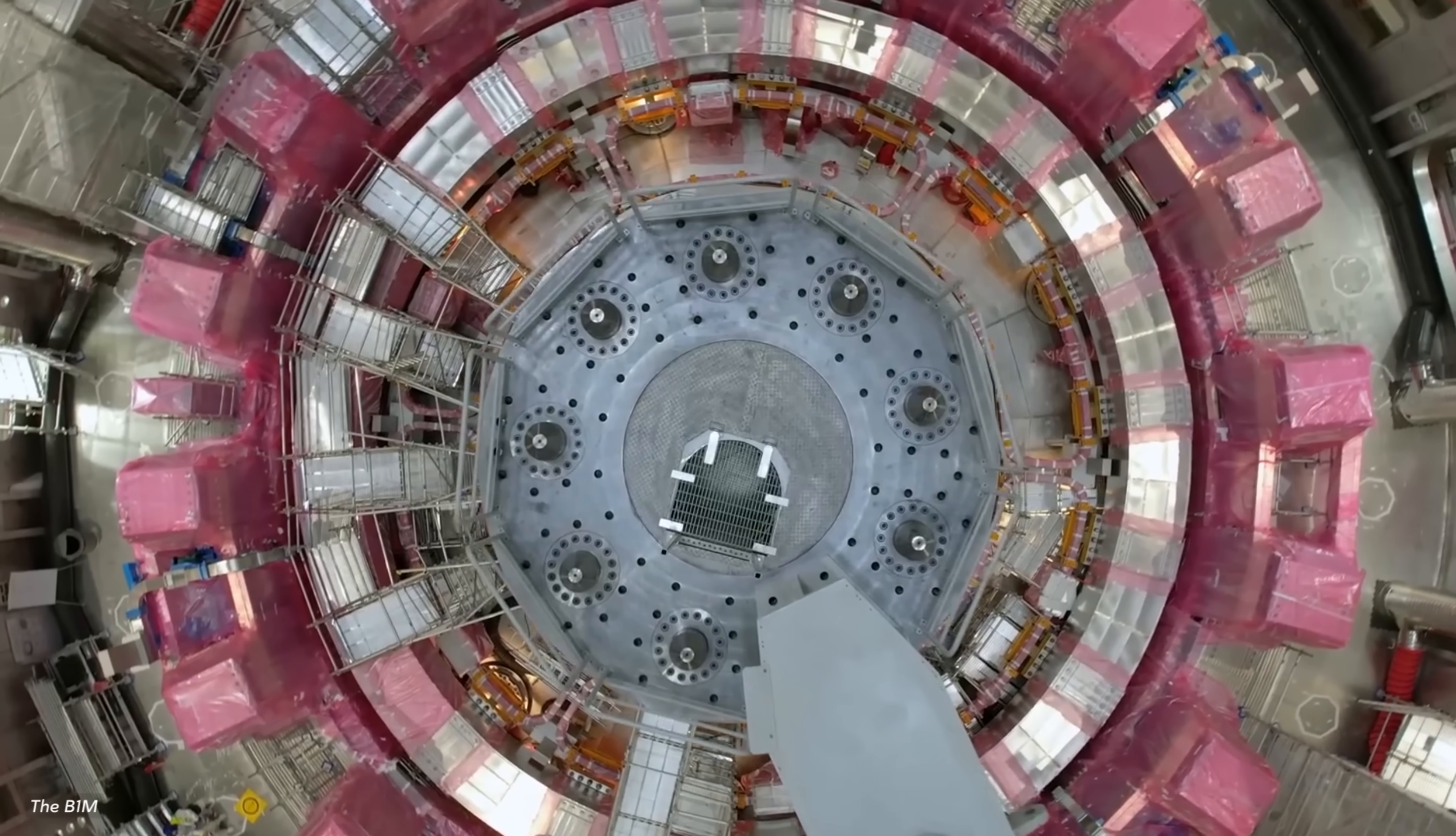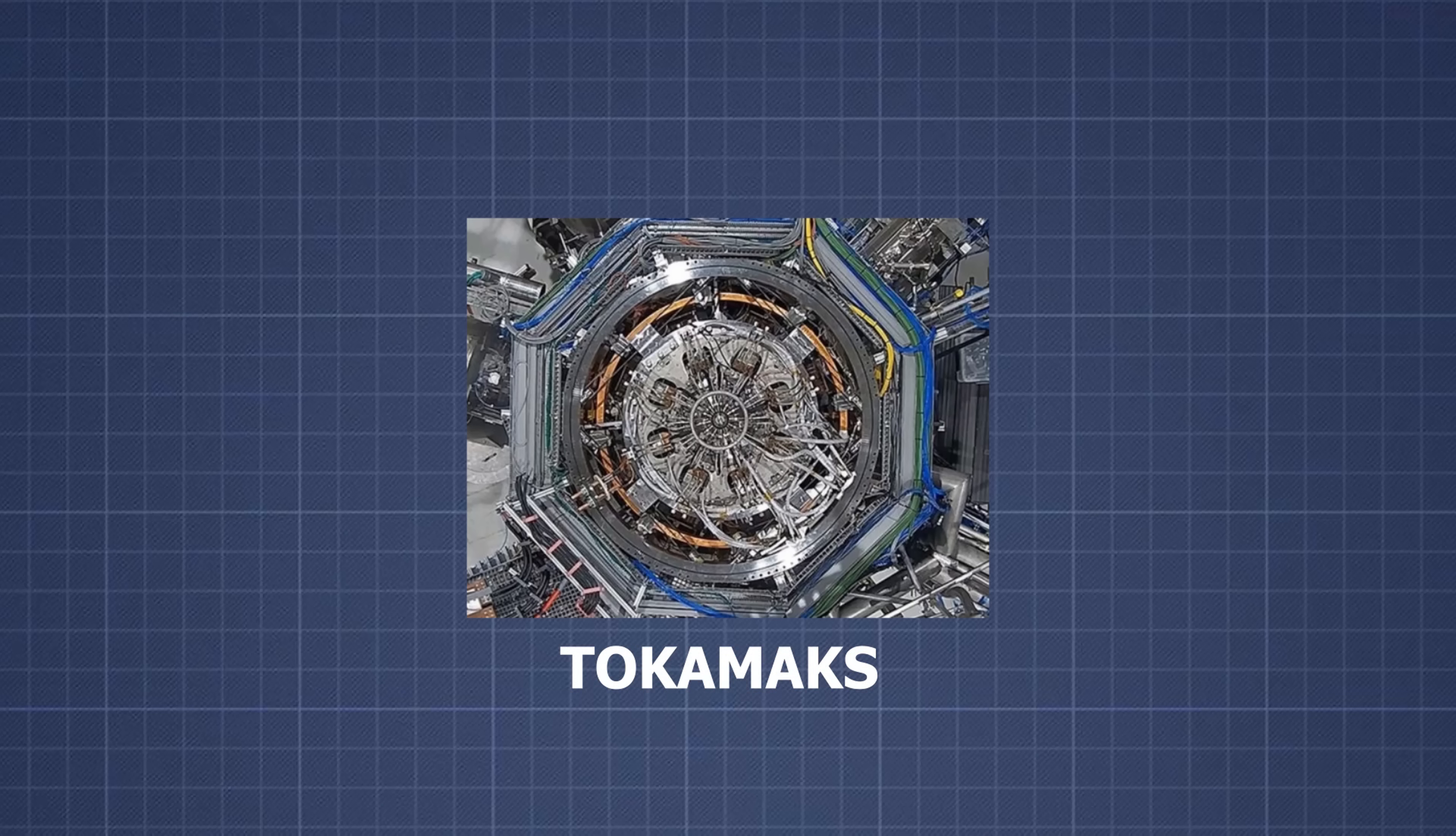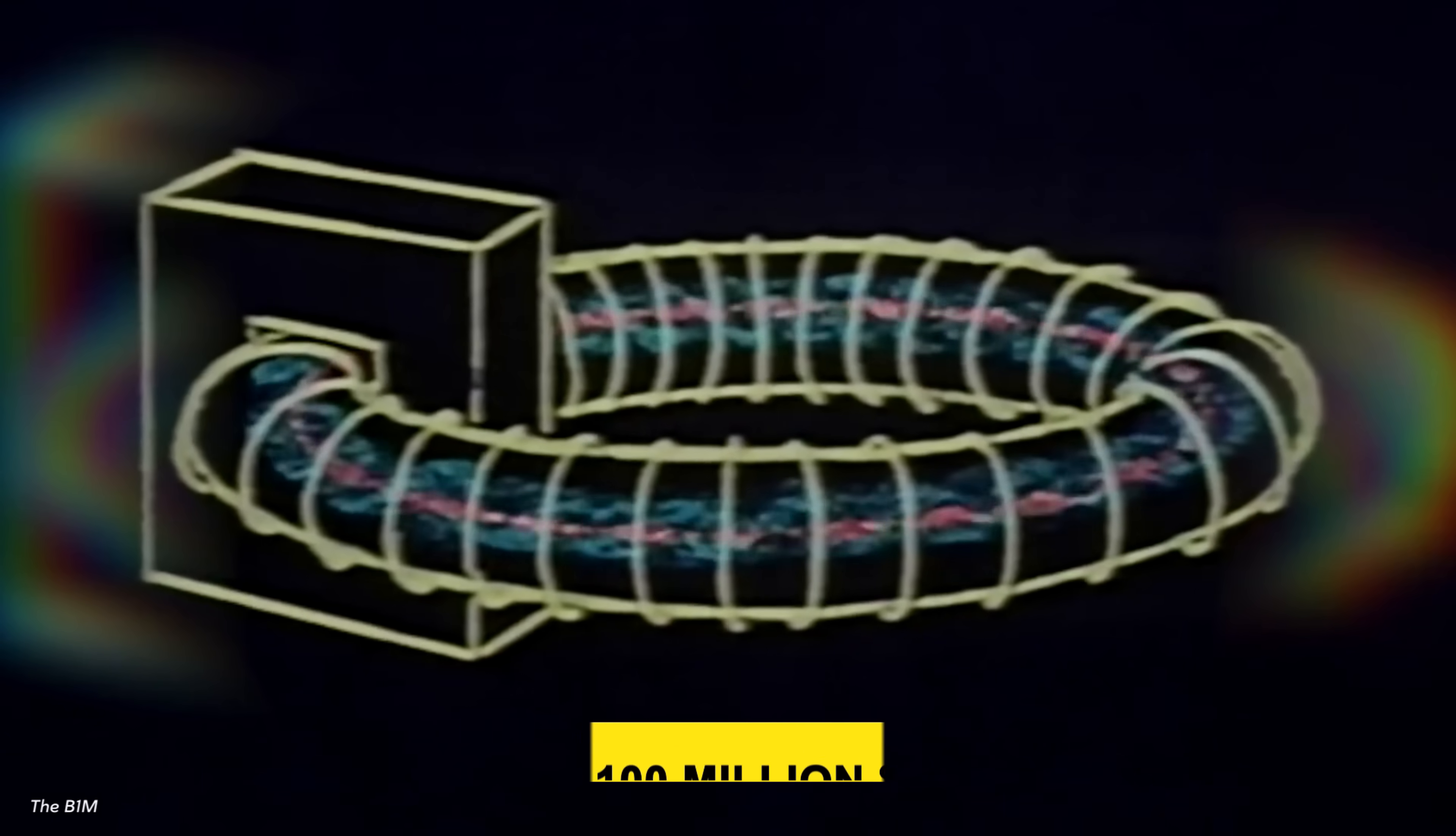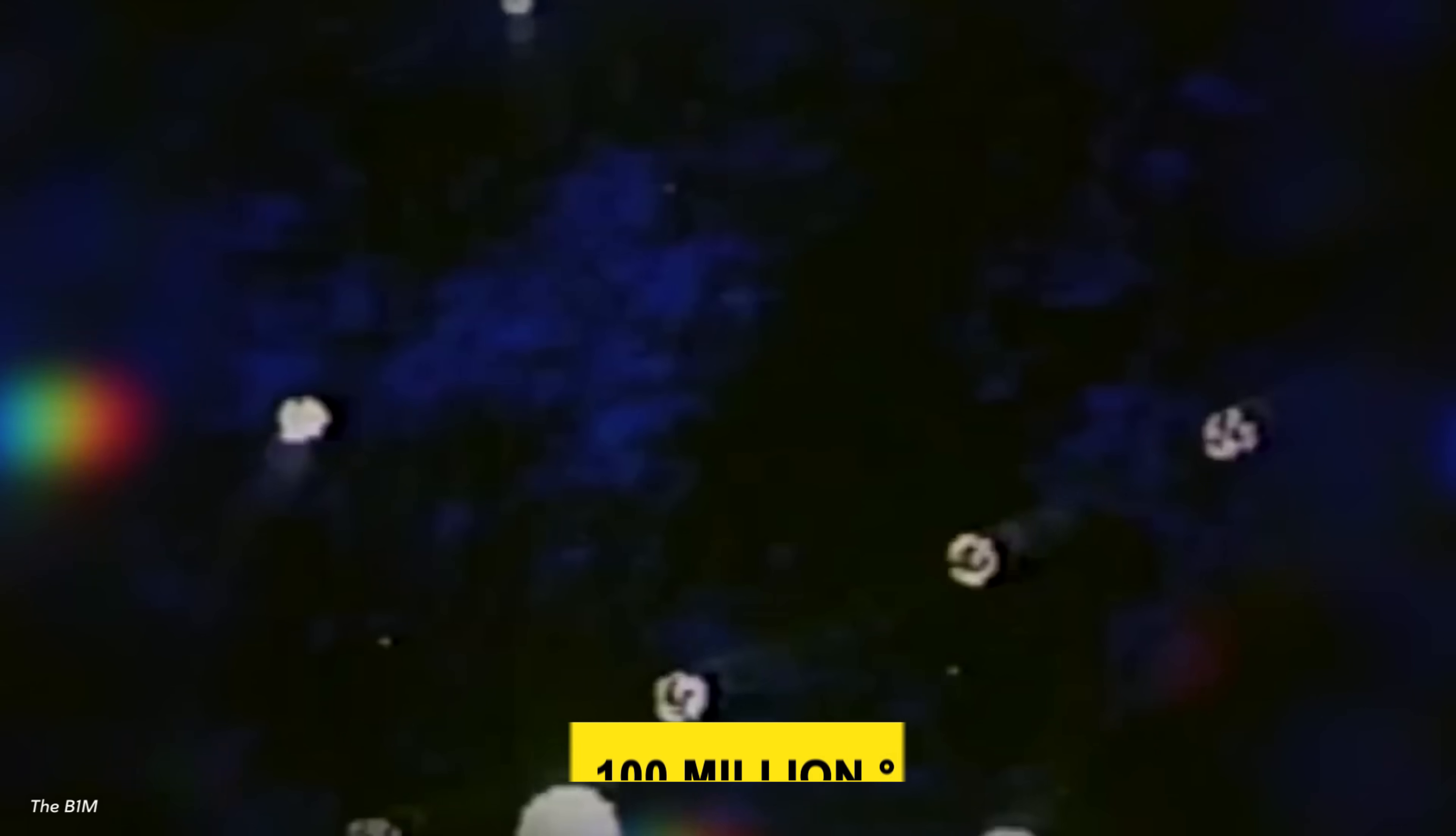Most fusion projects around the world use massive magnetic machines called tokamaks. They heat hydrogen gas or plasma to over 100 million degrees and try to hold it in place long enough for fusion to happen.